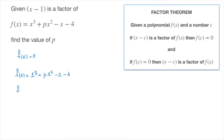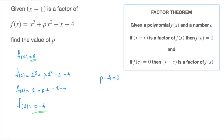That's f of 1 equals 1 cubed, which is just 1, plus p times 1 squared, so that's plus p times 1, minus 1, minus 4. Gathering all the like terms, we find f of 1 must equal p minus 4. But the factor theorem tells us that f of 1 must equal 0. So p minus 4 must equal 0, which leads to p equals 4.